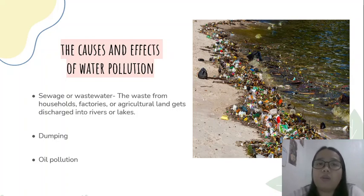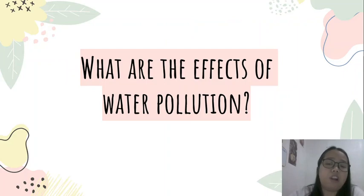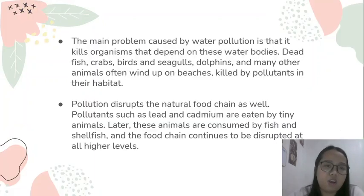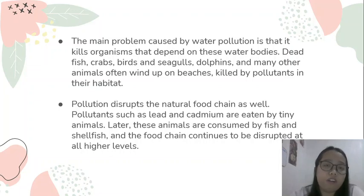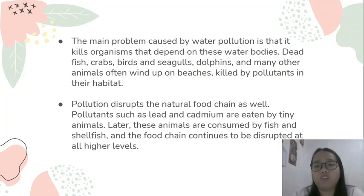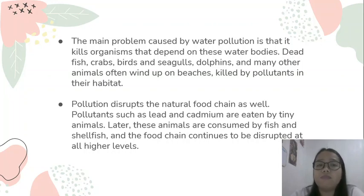Water is our main source of survival. The effects of water pollution can be catastrophic depending on the kind of chemicals, concentrations of the pollutants, and where they are found. The main problem caused by water pollution is that it kills organisms that depend on these water bodies. Dead fish, crabs, birds, seagulls, dolphins, and many other animals often end up on beaches killed by pollutants in their habitat.